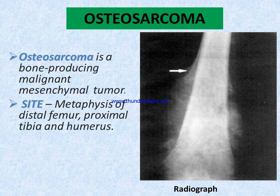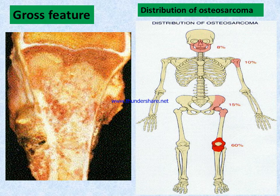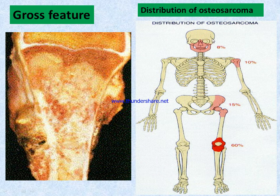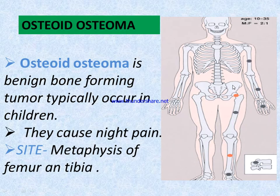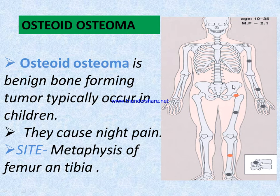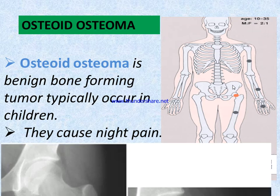Osteosarcoma is a bone-producing malignant mesenchymal tumor. Its site is the metaphysis of the distal femur, proximal tibia, and humerus. This image shows the distribution of osteosarcoma — facial 8%, humeral head 10%. Osteoid osteoma is a benign bone-forming tumor that typically occurs in children and can cause night pain. Its site is the metaphysis of the femur and tibia.